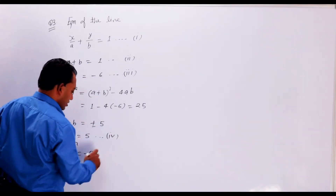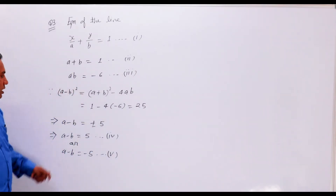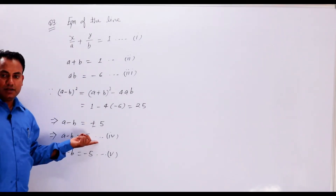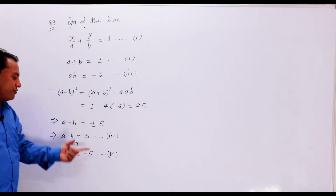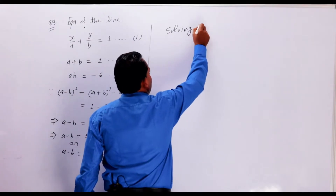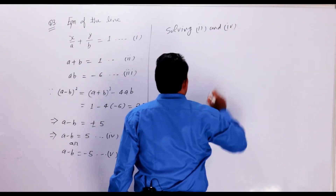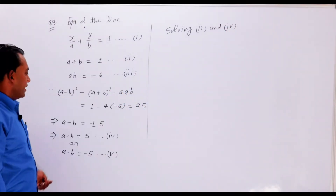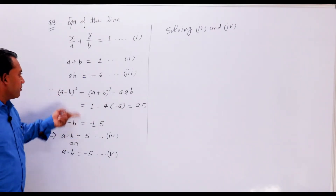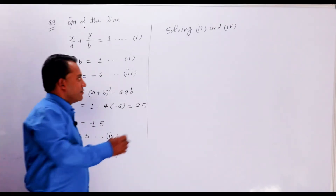Now we label these as equations fourth and fifth. Solving second and fourth equations together using elimination: when you add both equations, B cancels out. So 2A is equal to 6, therefore A is equal to 3.